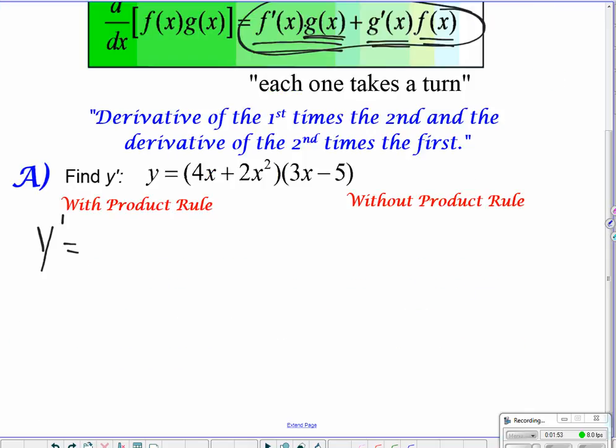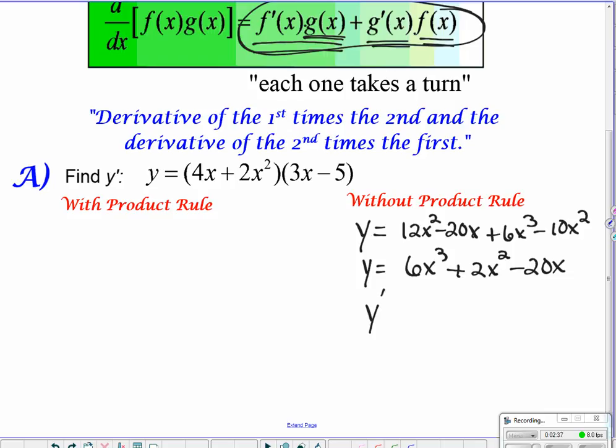So we're going to do example A here, and we're given two functions. Now, we could certainly do this without the product rule. I could just FOIL this out, and I'd have 12x squared minus 20x plus 6x cubed minus 10x squared. And if I simplified it, 6x cubed plus 2x squared minus 20x. And then I'm going to go into my derivative, y prime is equal to 18x squared plus 4x minus 20. That is easy to do without the product rule.